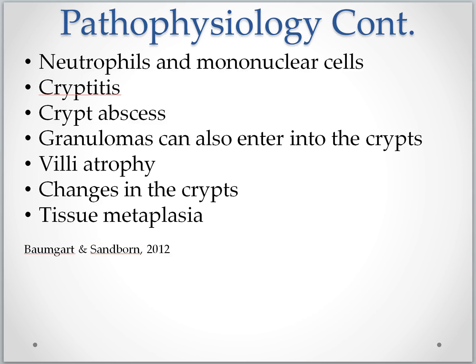Mucosal inflammation leads to the presence of neutrophils and mononuclear cells into the epithelium, which then enter the crypts, causing inflammation in the crypts — this is called cryptitis. This inflammation in the crypts can lead to crypt abscesses. Granulomas can also enter into the crypts during this inflammatory response.